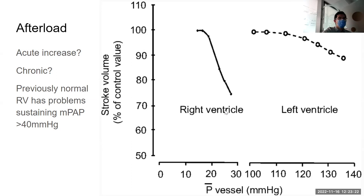Why is this important? If you see acute pulmonary hypertension, you'd want to ask how the right heart is doing, because under a normal heart that is not trained, it's going to be doing poorly. The right heart is very sensitive to RV afterload.